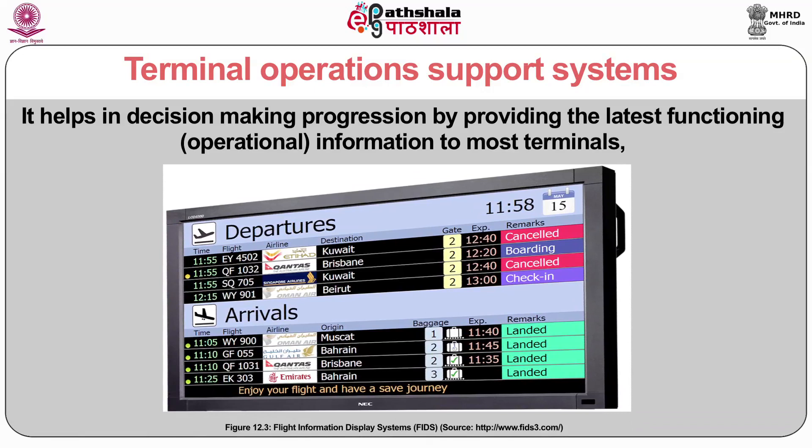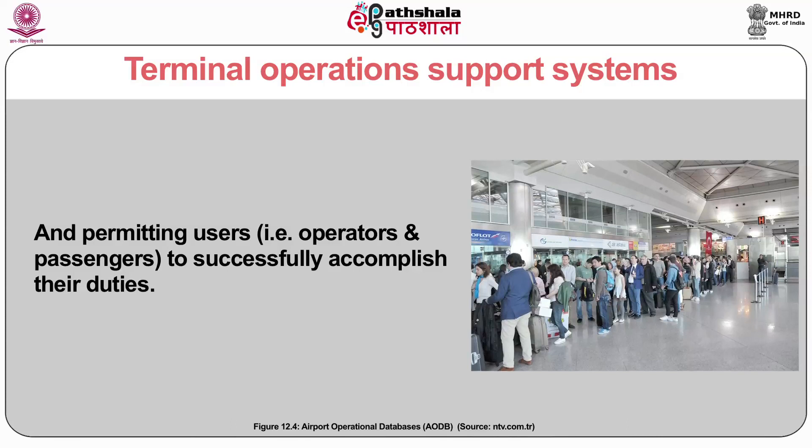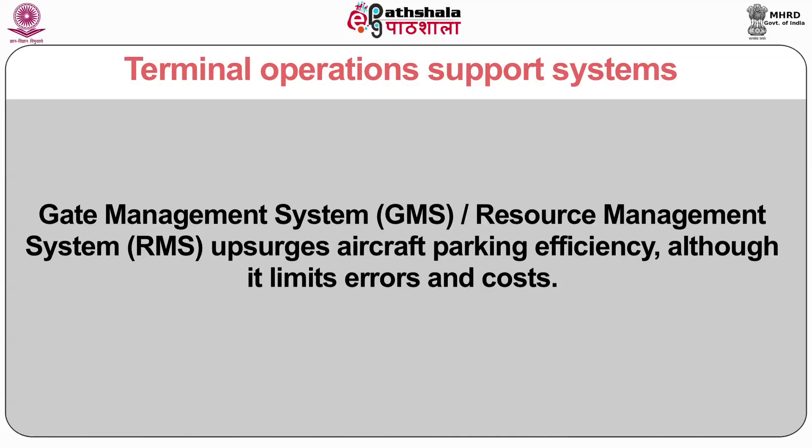The system enhances complete proficiency and performance of operations by providing correct past and real-time airport information. It helps in decision making by providing the latest functioning information to most terminals and permitting users — that is operators and passengers — to successfully accomplish their duties. The gate management system (GMS) or resource management system (RMS) increases aircraft parking efficiency while limiting errors and costs.